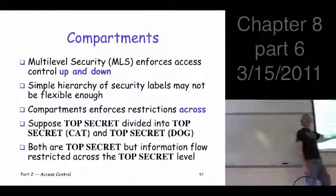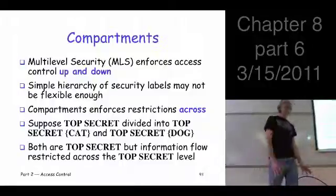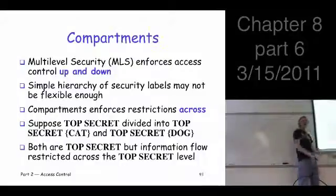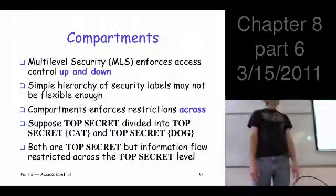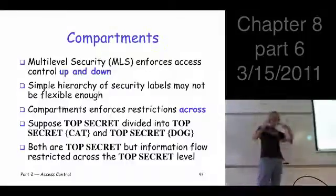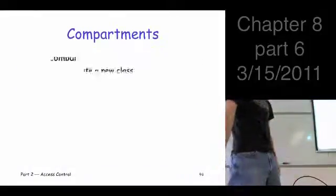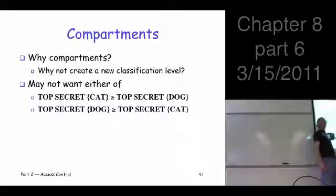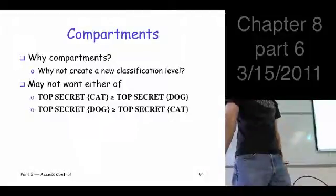So why do we do this? Instead of creating these compartments and making things more complicated, why don't we just create another level above top secret — call it 'top top secret' — and put things like cat and dog up there? The problem is that in a hierarchy, whoever is on top gets to see everything else. We don't want that. We just want to keep them separate. That's the idea of the compartment. You can't just create a new level because we don't want cat people to see dog information or vice versa. Compartments allow us to accomplish that.